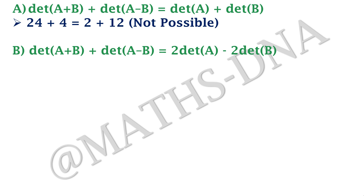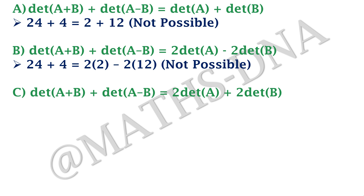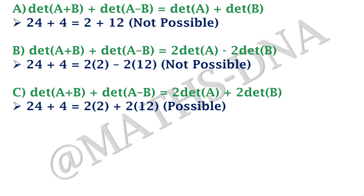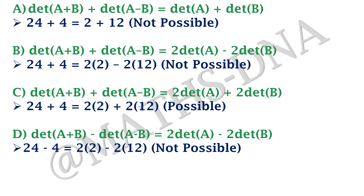Option B: 24 + 4 = 2·2 − 2·12, which gives 28 ≠ −20, so option B is not correct. Option C: 24 + 4 = 2·2 + 2·12, giving 28 = 28, which is true — so option C is correct. Option D: checking similarly gives 24 + 4 ≠ 2·2 − 2·12, so option D is not correct. By taking this example we eliminated three options.